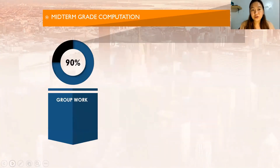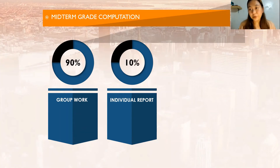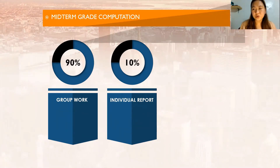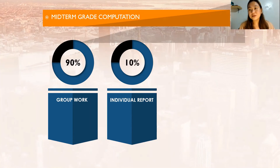For the midterm grade computation: 90% will be the group work score, and 10% will be for the individual report — whatever you present in the video. This is to make sure everyone participates, because groupings can sometimes have issues. Adding 10% for the individual report ensures that everyone contributes and has a part in the output.